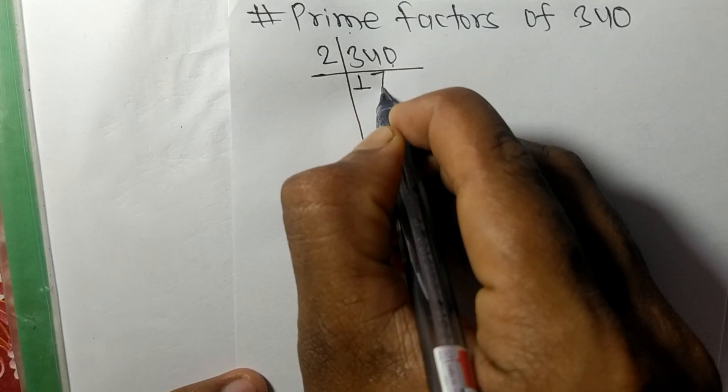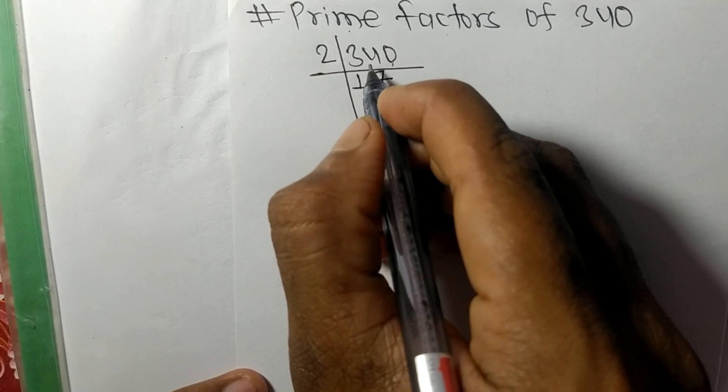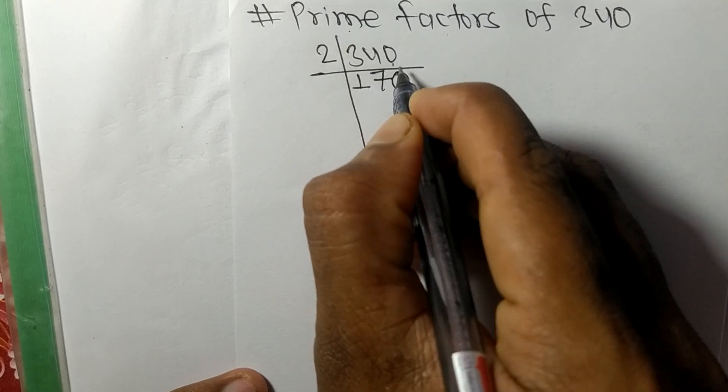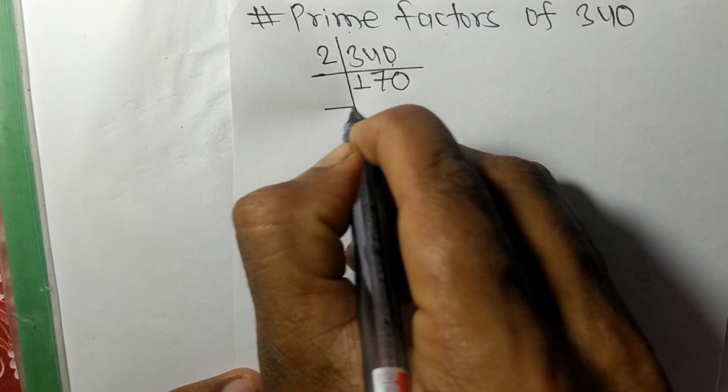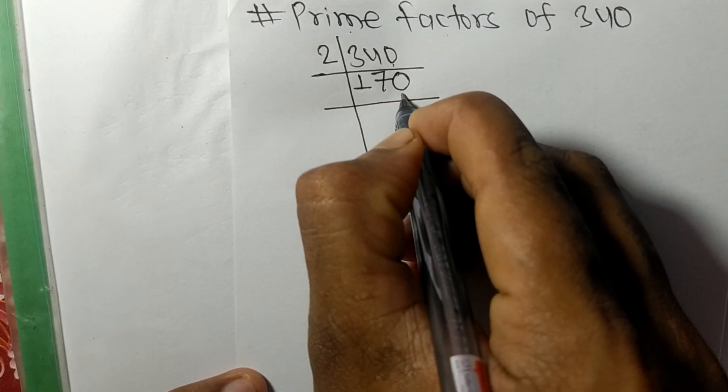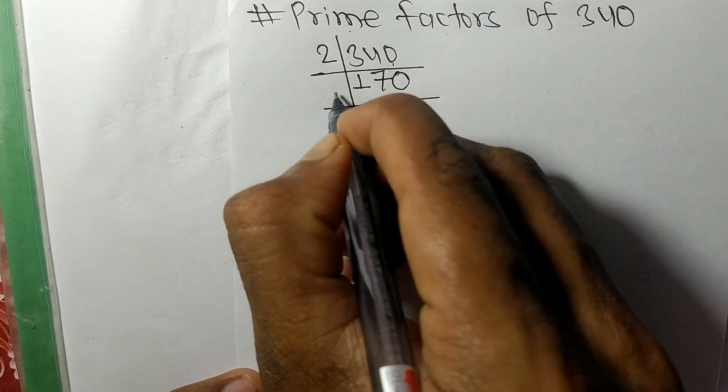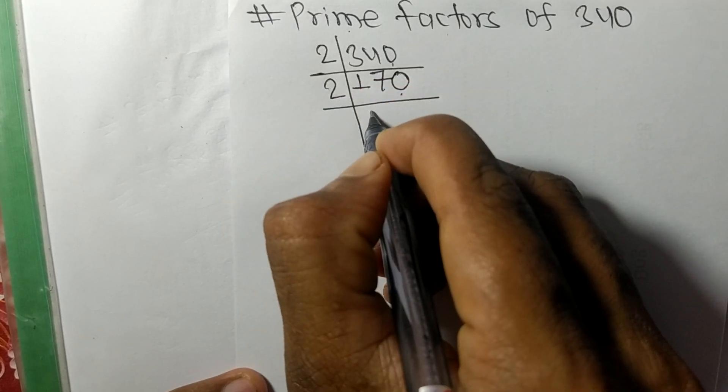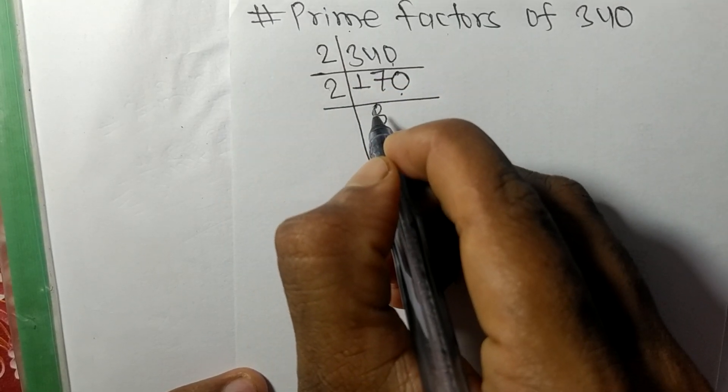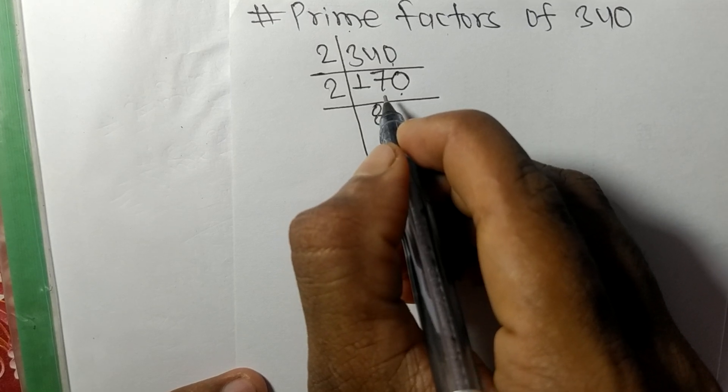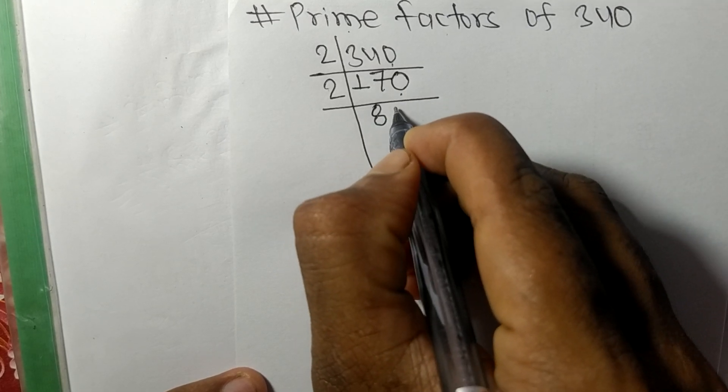Again it has 0 at last, so it is divisible by 2. So 2 times 8 means 16, remainder 1. So 10, 2 times 5 means 10.